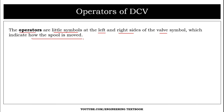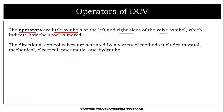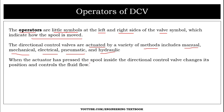The operators indicate how to move the spool. DCVs are activated by a variety of methods including manual, mechanical, electrical, pneumatic, and hydraulic. When the actuator presses the spool inside the DCV, the DCV changes its position and controls the flow of fluid.